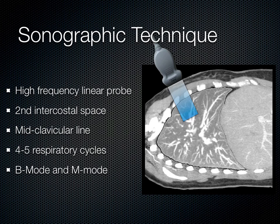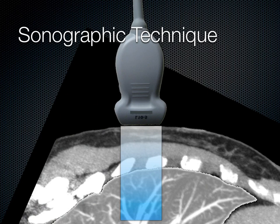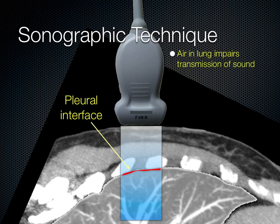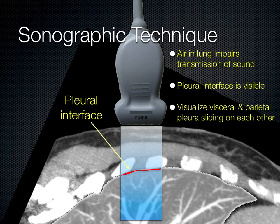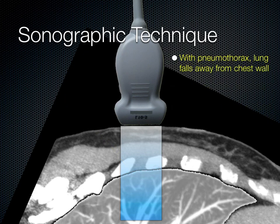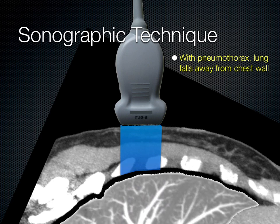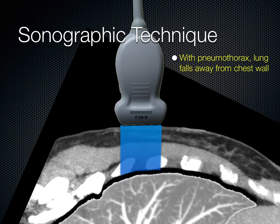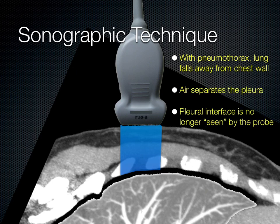Using the linear probe with indicator towards the head at the second intercostal space, mid-clavicular line, watch through several respiratory cycles. At the pleural interface, you'll be able to appreciate sliding — it appears as ants marching or shimmering at that interface. The air in the lung beyond that interface impairs transmission of sound, so you won't see the lung itself unless it's consolidated; you might see A lines or B lines. However, when there's a pneumothorax, the lung falls away from the chest wall and the ultrasound beam is cut off right at that interface because it encounters air. The visceral and parietal pleura are no longer touching, so you will no longer see motion at the pleural line.